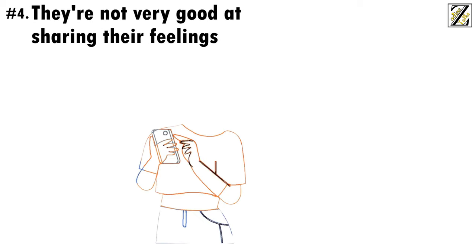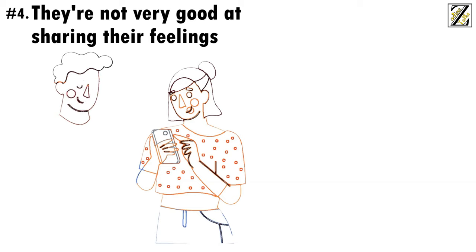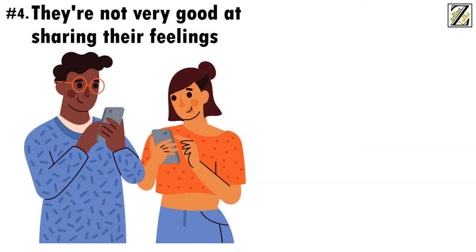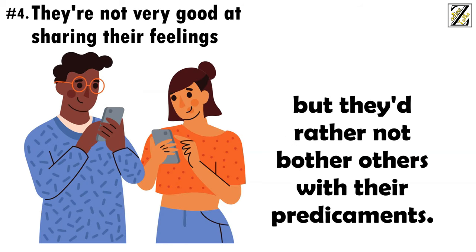Number 4. They're not very good at sharing their feelings. Though they're always happy to listen to others and offer advice, they're not very good at sharing their feelings and talking about their problems. They're not reserved, but they'd rather not bother others with their predicaments.